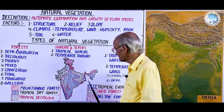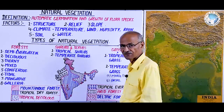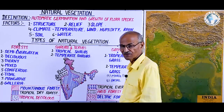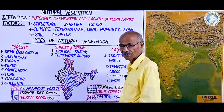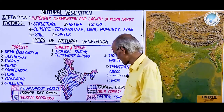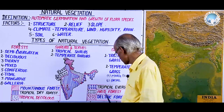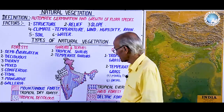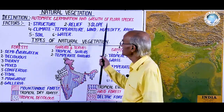Temperate grass is a very important resource for the tribal pastoral communities in the Middle and Greater Himalayas. Tropical Savanna and temperate grass are the two important grass types in India.